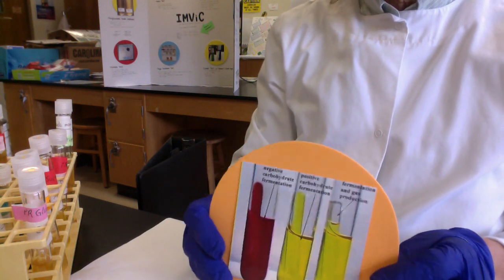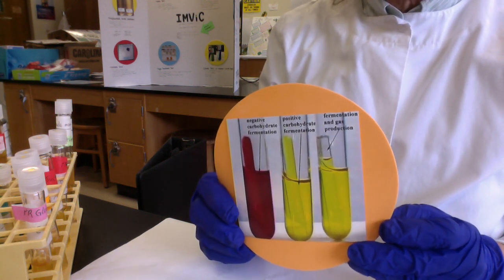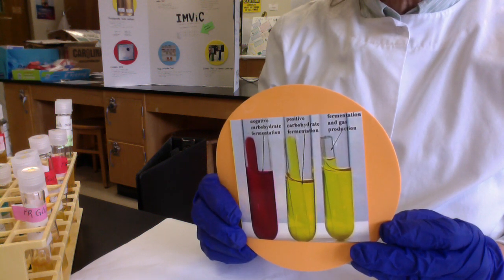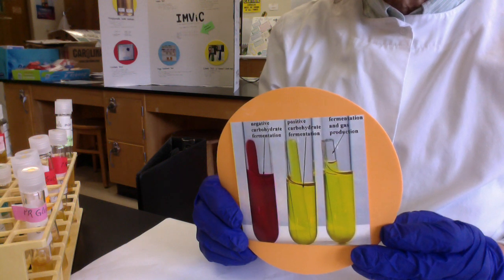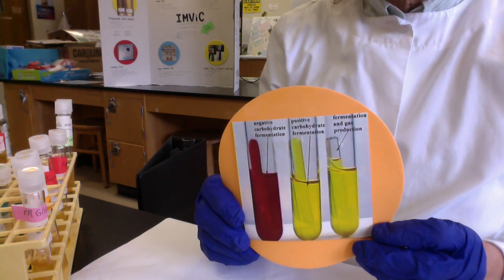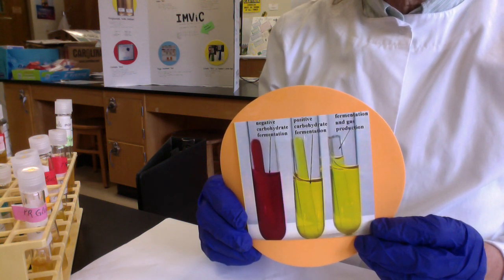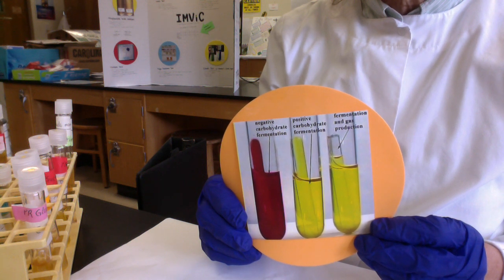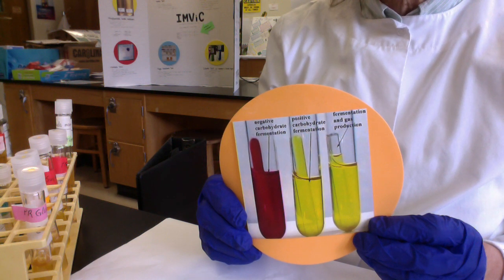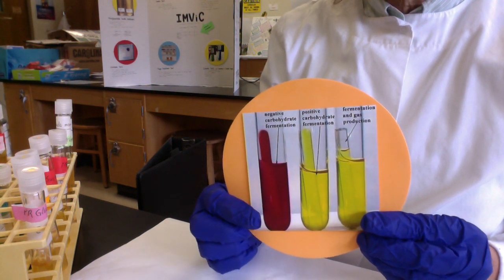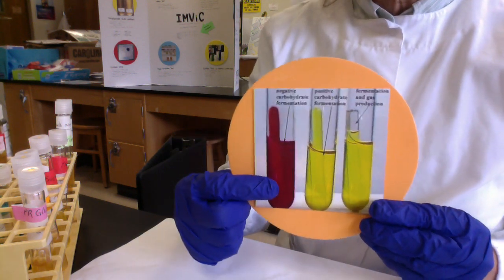The PR sugar fermentation medium has a single sugar, and we name the media after the sugar: PR glucose or dextrose, PR lactose, or PR sucrose. In addition to sugars, we have proteins and amino acids as alternate carbon and energy sources for microbes that can't ferment sugars. The pH indicator is phenol red. At acidic pH, phenol red turns yellow, and at alkaline pH, phenol red turns dark red fuchsia.